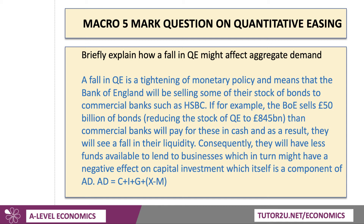Consequently, they will have less funds available to lend to businesses — perhaps even mortgage lending might be hit — which in turn might have a negative effect on capital investment, which itself is a component of aggregate demand. AD equals C plus I plus G plus X minus N. So if QE being reined back reduces the ability of banks to lend, and that leads to a fall in capital investment spending, that would bring down aggregate demand.